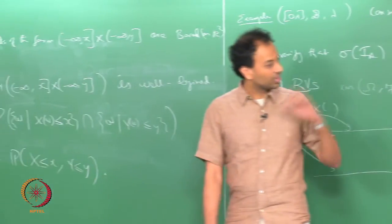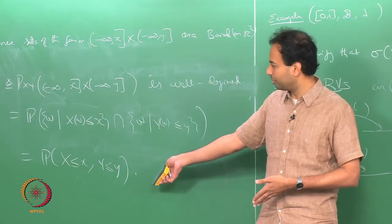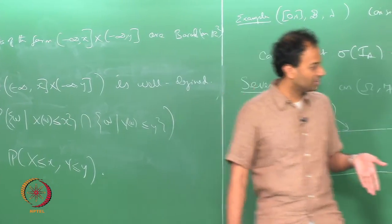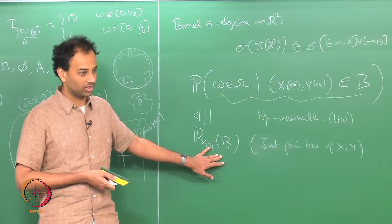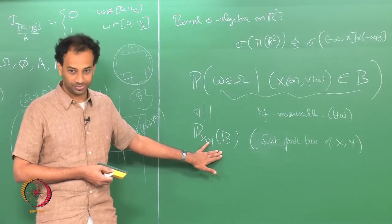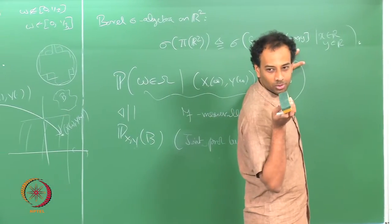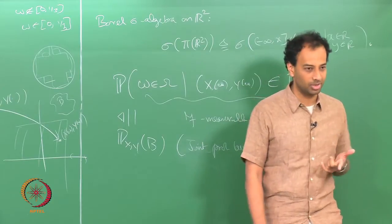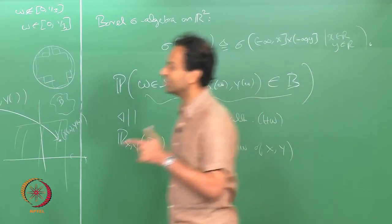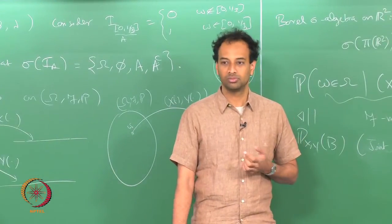Even if P_X and P_Y are separately Lebesgue measures, P_{X,Y} may not be the Lebesgue measure on ℝ². Now, if I give you the joint probability law I can specify the joint CDF — and the opposite is also true. Because the semi-infinite rectangles form a pi system on ℝ², and by the pi system uniqueness theorem, if we specify a measure on the pi system it gets uniquely specified on the sigma algebra as well.